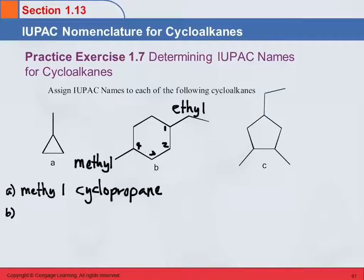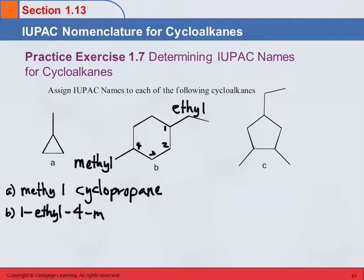So we're going to start with 1-ethyl — we separate numbers and letters with a dash — then 4-methyl, and that runs right into cyclohexane: 1-ethyl-4-methylcyclohexane.